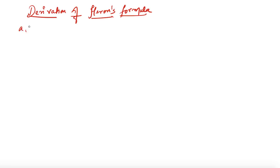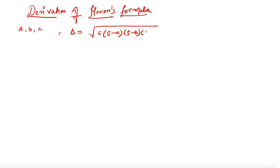For any triangle with sides A, B, and C, the area of the triangle is given as the square root of S times (S minus A) times (S minus B) times (S minus C). This is Heron's formula. Now let us move to the derivation part.